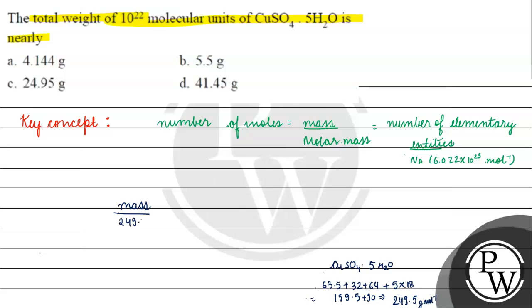249.5 grams per mole equals the number of elementary entities, which we have as 10^22 molecules, divided by Avogadro's number, 6.022 × 10^23 mol^-1. The mole inverse cancels out.